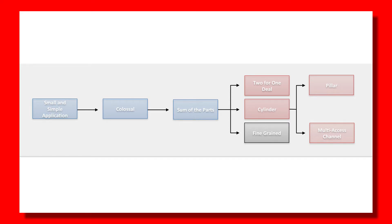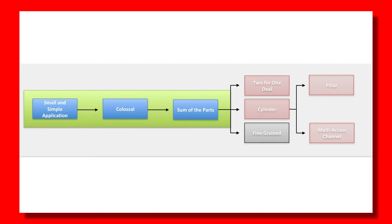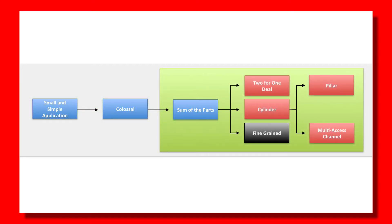This diagram shows a genealogy map of all the ADF patterns and how they progress. From left to right, the patterns on the left in blue are revolutionary changes, each introducing new ADF features that allow quite sophisticated architectures. Once we reach the Sum of the Parts architectural pattern, it opens up a number of permutations such as the two-for-one deal, the cylinder pattern, the pillar pattern, and the multi-axis channel pattern — all permutations of Sum of the Parts made available by introducing one sophisticated ADF feature.